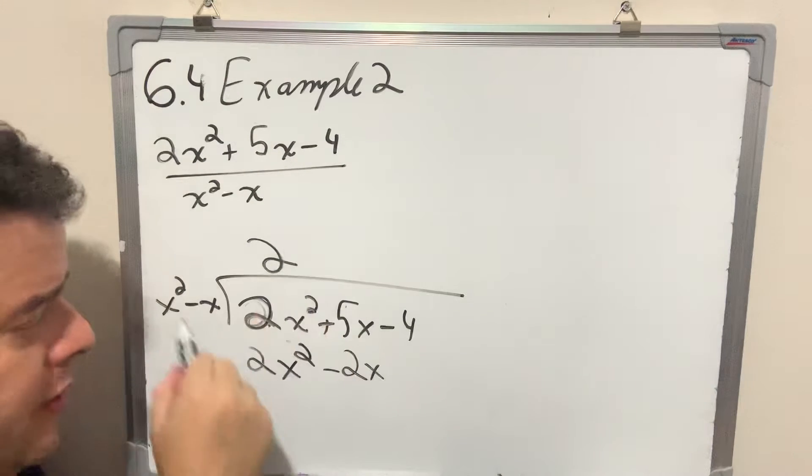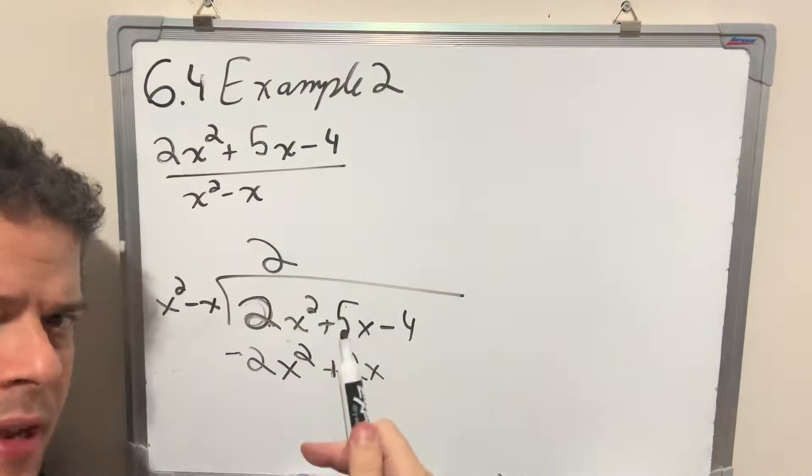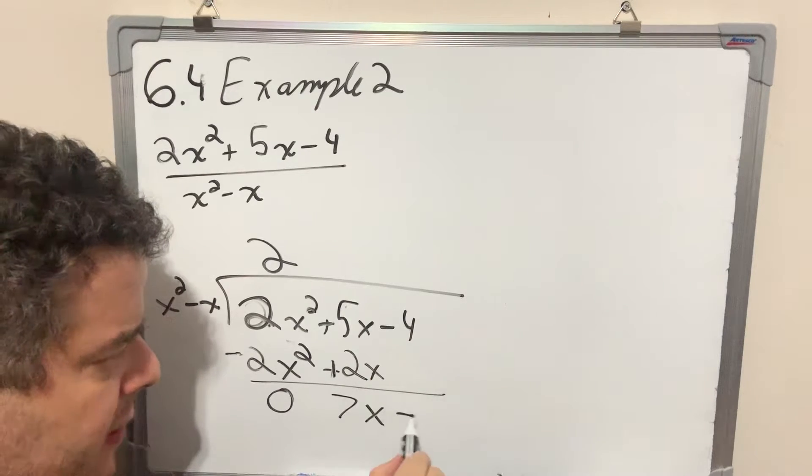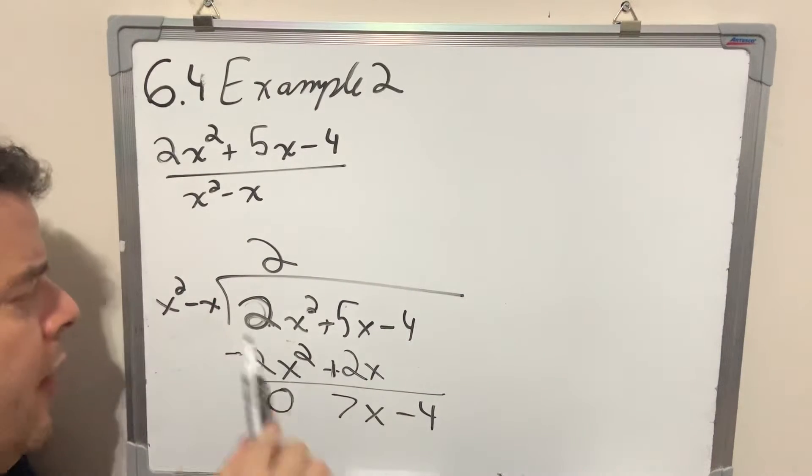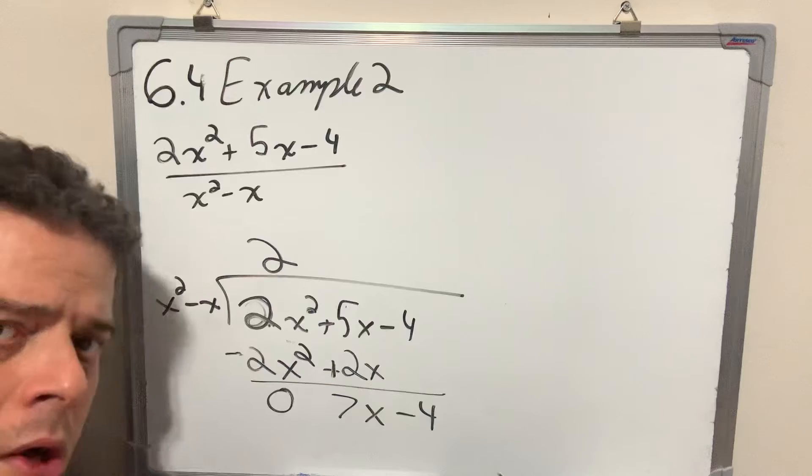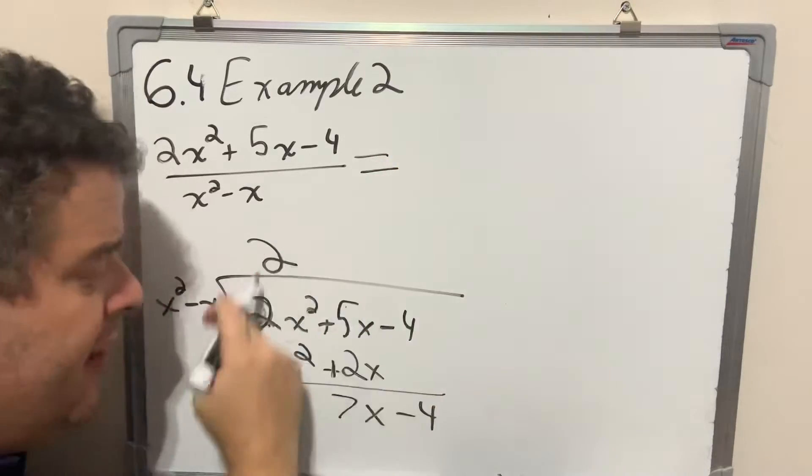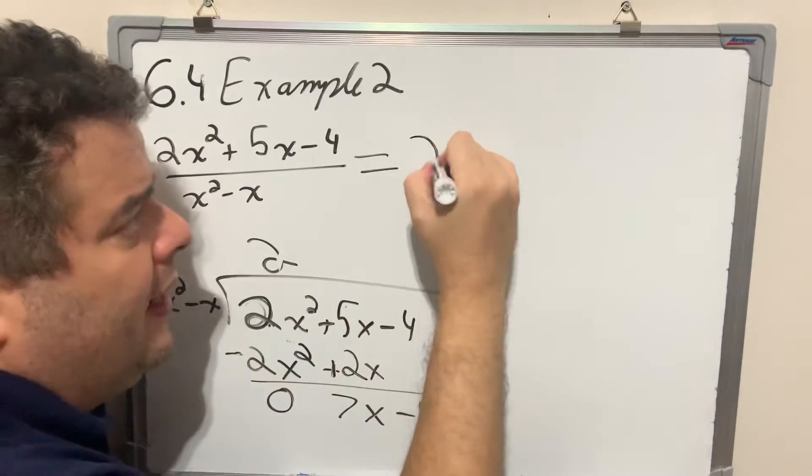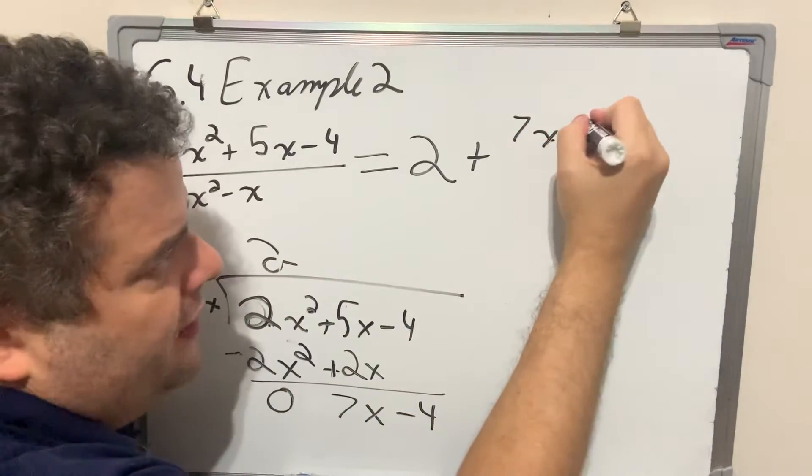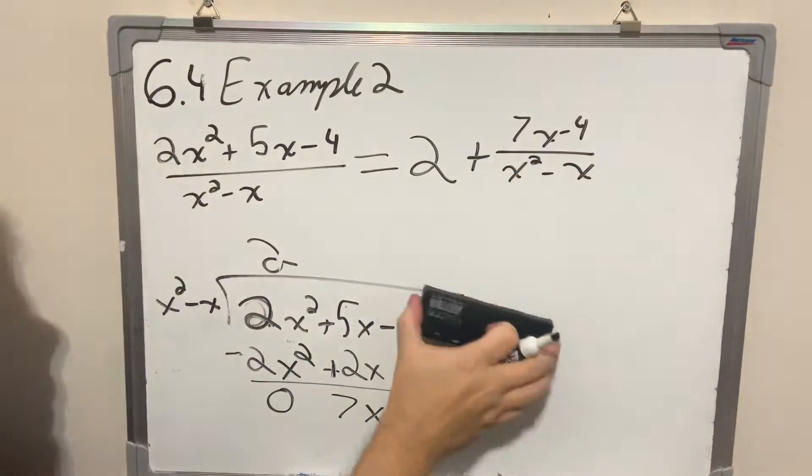After you multiply, we change the signs. So this becomes negative, this becomes positive. Now I add. This goes away, which is the whole point. This becomes 7x minus 4. Now notice, I can no longer continue doing long division because the degree here is bigger than the degree here. So I'm done doing long division. Now I'm going to rewrite this expression as the answer that I got here. So I'm going to get 2 plus the remainder, 7x minus 4 divided by x squared minus x. I don't need this anymore.